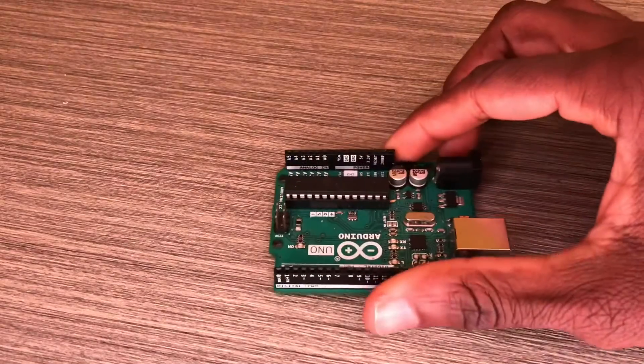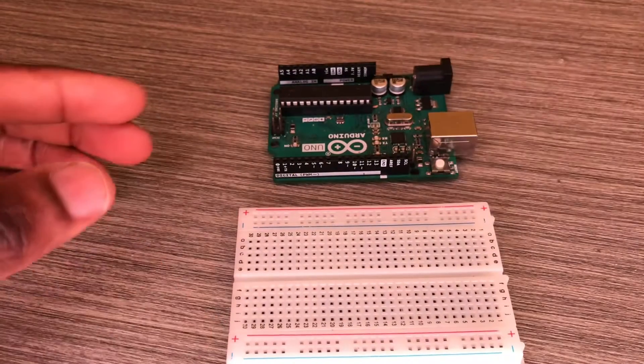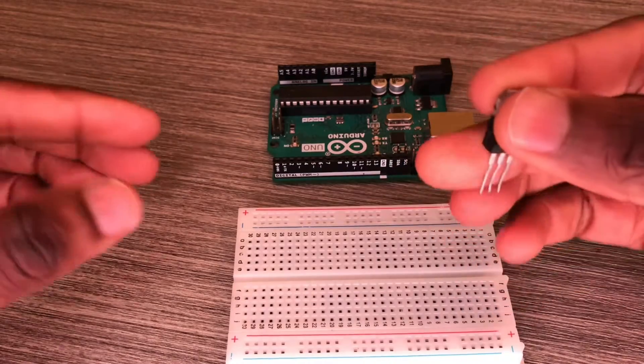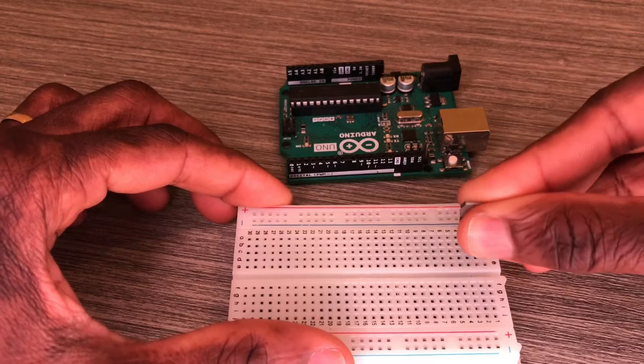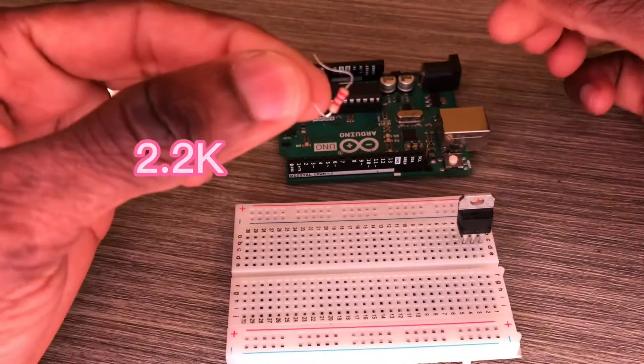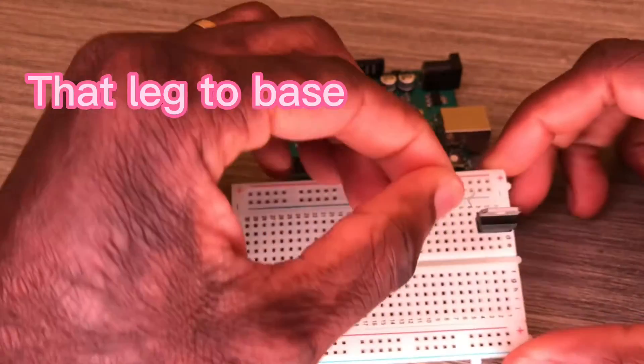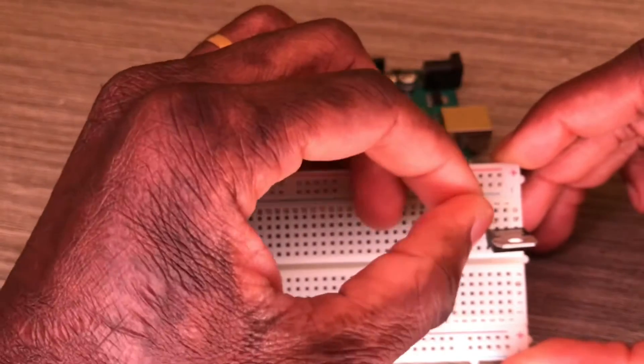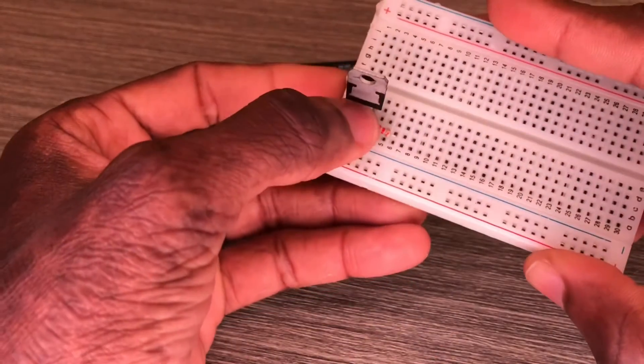We need an Arduino Uno, a breadboard - please read the title of this video to understand it. We put this TIP120 transistor on the breadboard. We need a 2.2k ohm resistor that goes to the base of the transistor like so.